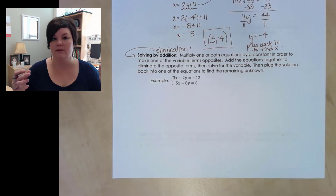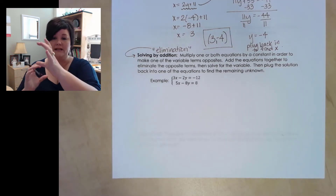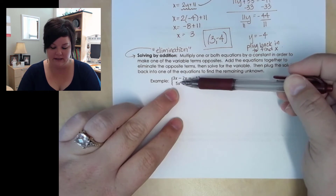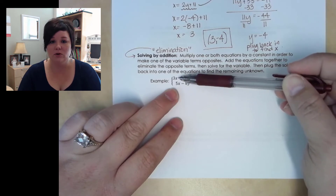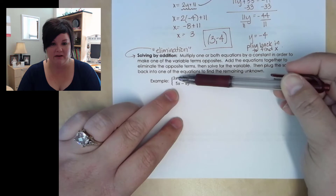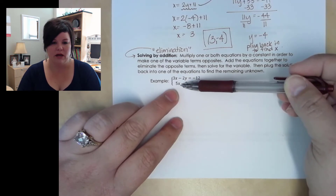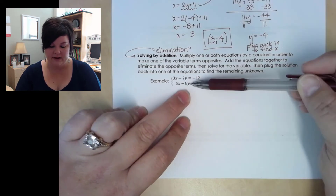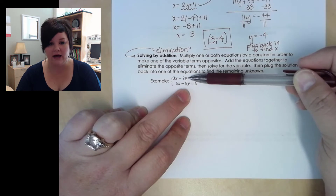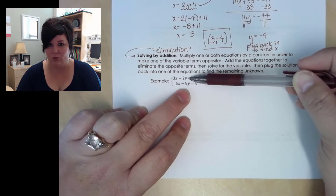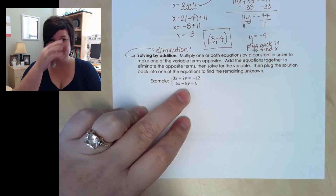I need to figure out what to multiply by to make the x's or y's into opposite terms. Looking at the x coefficients, 3 and 5 aren't multiples of each other — I'd have to go to the LCM of 15, requiring multiplying both equations. But for the y terms, I can multiply 2y by negative 4 to get positive 8y, which would cancel with the negative 8y. I'll clear the y's since I only have to multiply one equation.